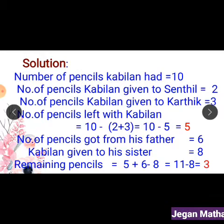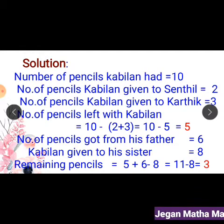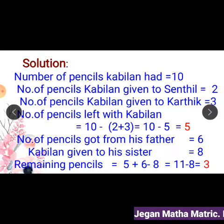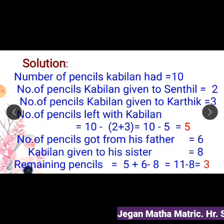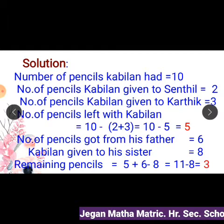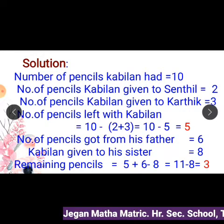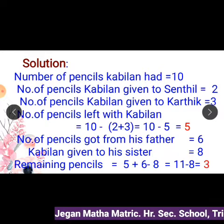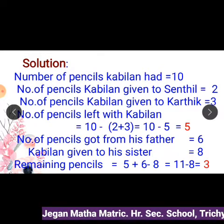Kabilan had only 5 pencils. Next day, his father gave him 6 more pencils. So the total number of pencils is equal to 6 plus 5 equals 11 pencils. Kabilan gave his sister 8 pencils. So the remaining pencils Kabilan had equal to 11 minus 8 equals 3.